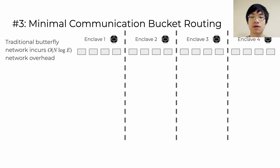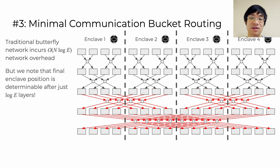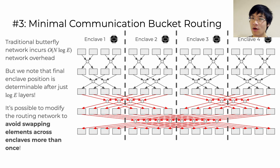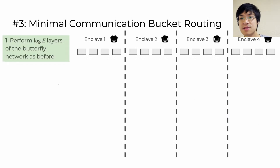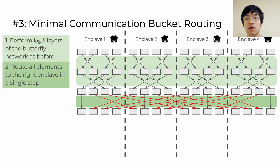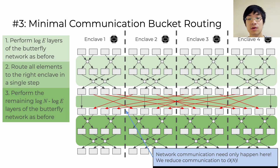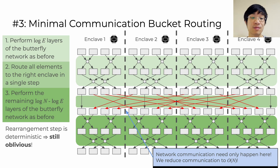Finally, distributing the bucket butterfly network across multiple enclaves leads to non-optimal behavior where in the last log e layers, all of these red arrows represent network communication swapping elements across enclaves. But this isn't actually necessary. After just the first log e layers of the butterfly network, we already know everything needed to determine a given bucket's final enclave position. In other words, we never need to swap elements across enclaves more than once. So instead, we still perform log e layers of the butterfly network, then add an additional rearrangement step to send all buckets to the correct enclave all at once. After this, we resume the remaining layers of the butterfly network to complete the oblivious shuffle without any additional network overhead. Since buckets are only ever sent over the network at most once, this reduces network communication to just O(n), and because the rearrangement step is fully deterministic, we still preserve obliviousness.